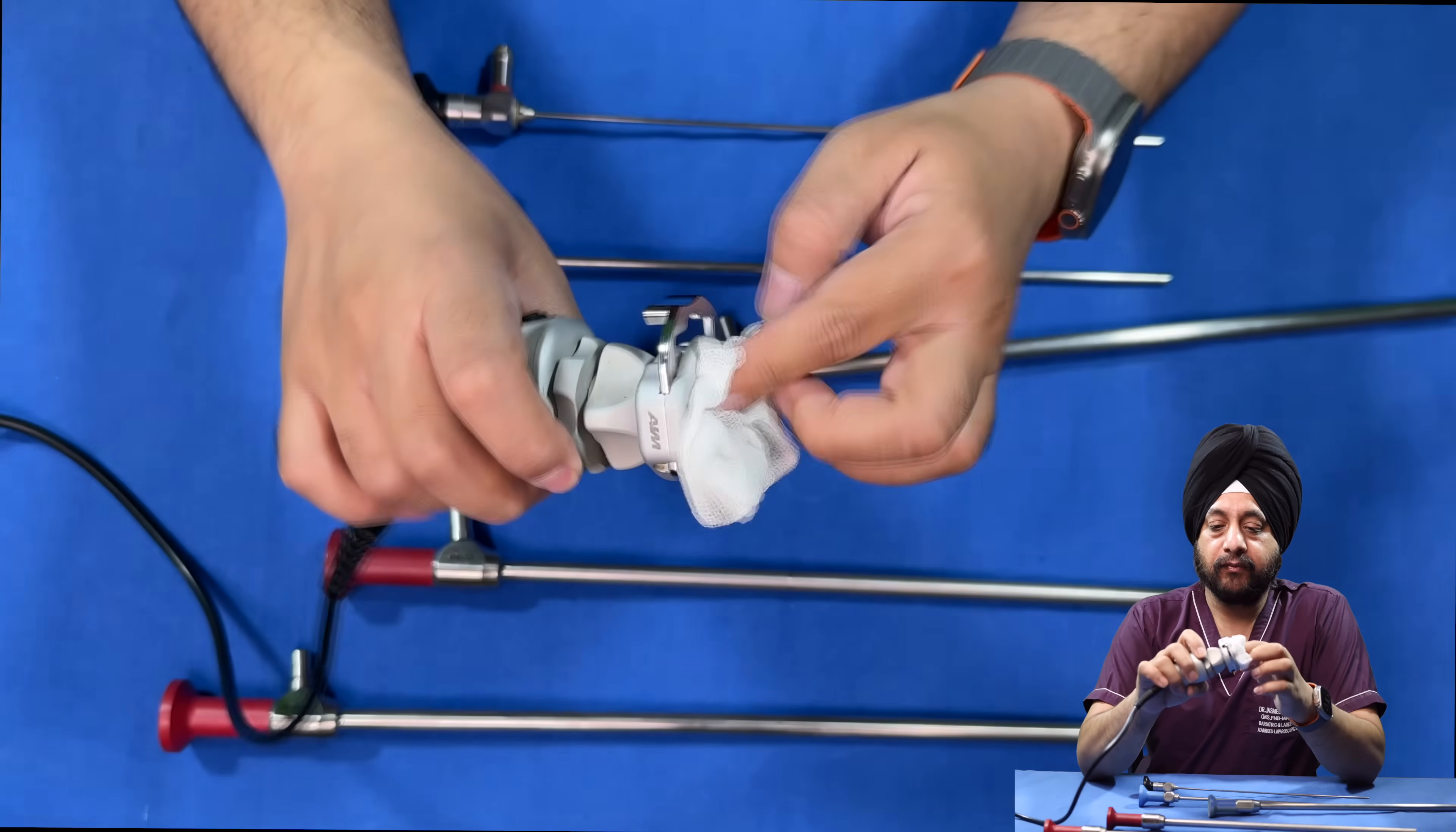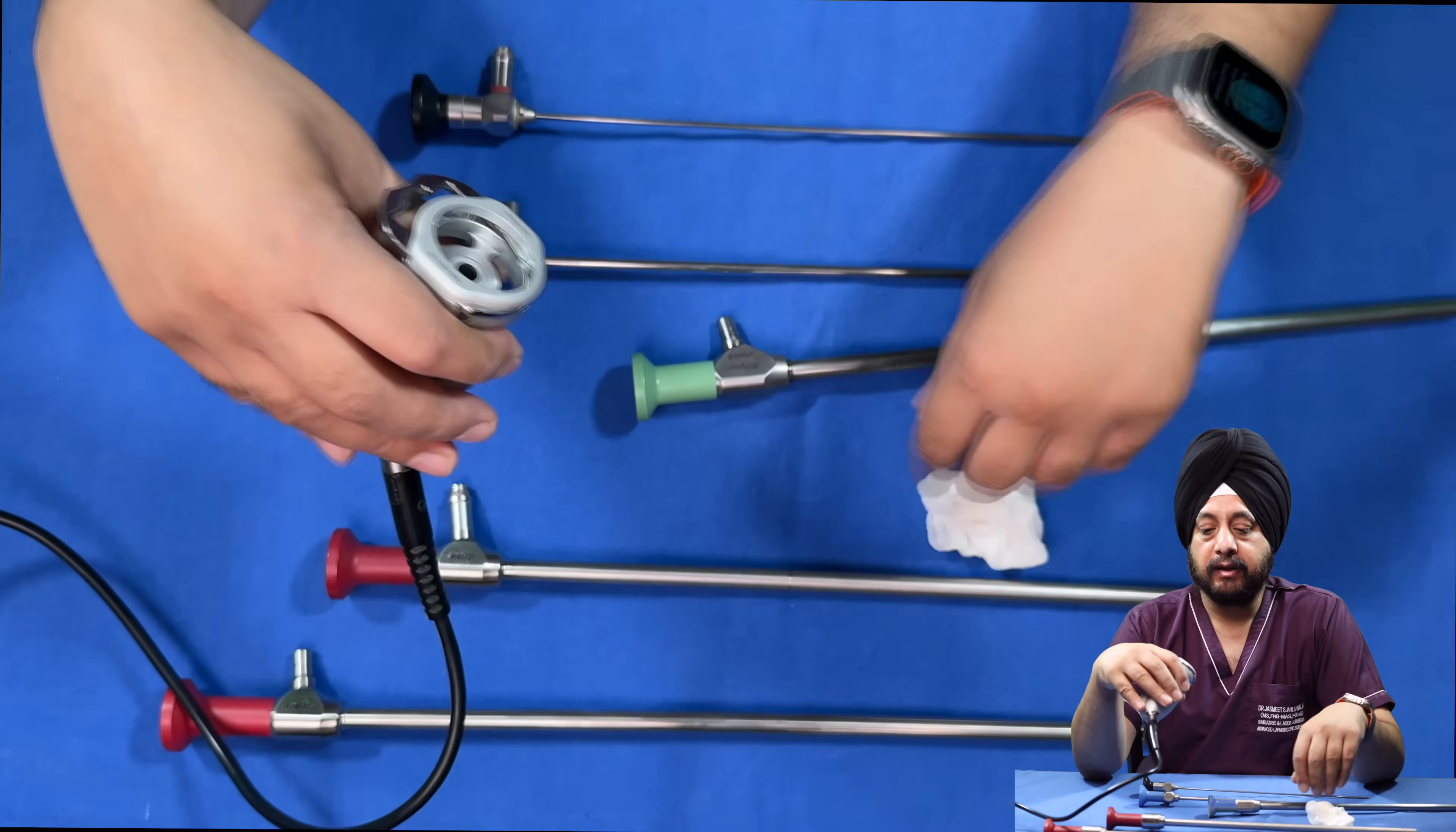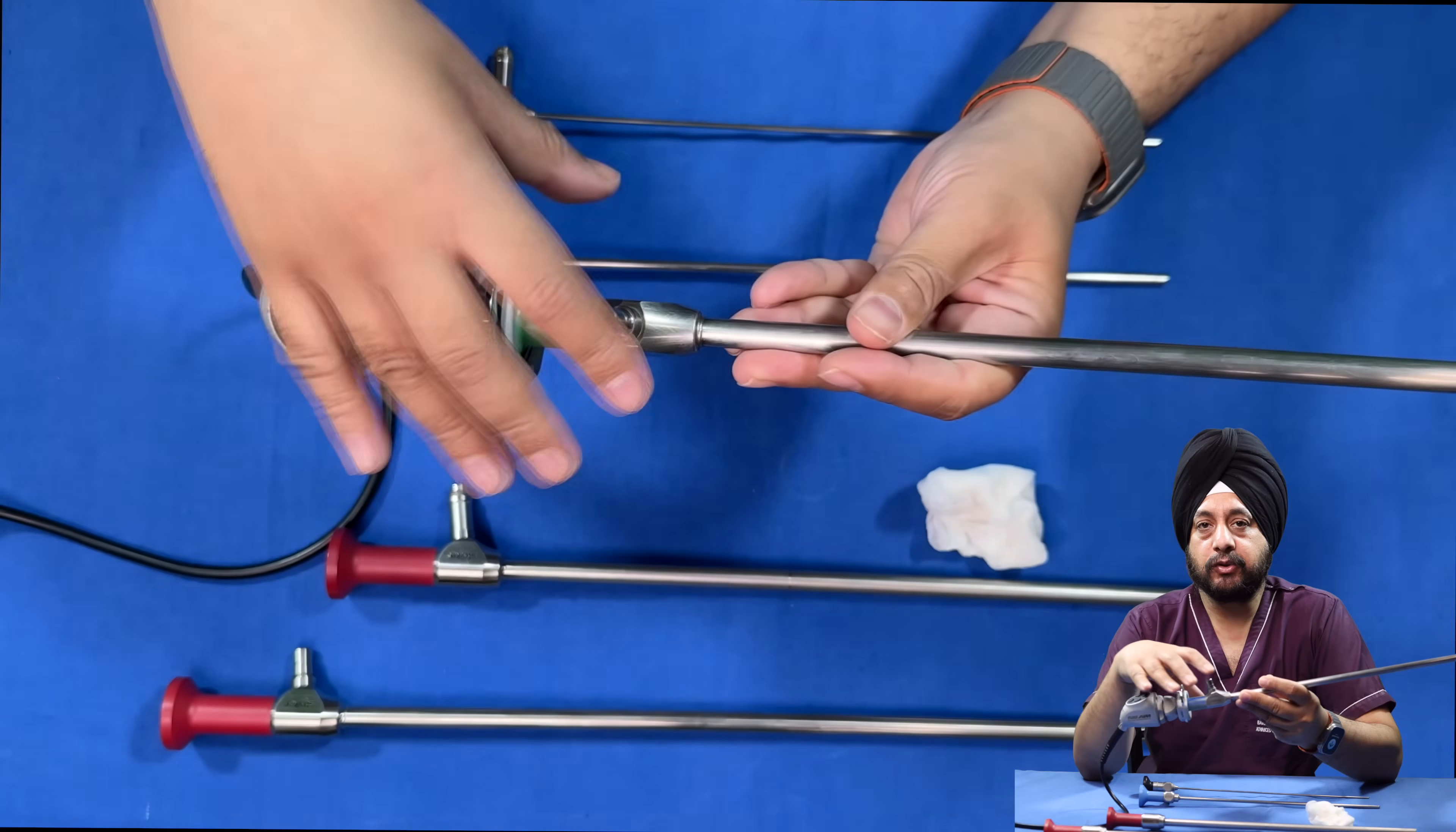Similarly, always clean the head of the camera with sterile gauze. The gauze should be very, very dry. Again, reflect light off the tip of the glass covering the lens and make sure it is absolutely clean before you make this junction. Once it's done, it doesn't get dirty during the procedure, so make sure you clean it very well before the surgery begins.